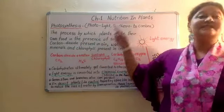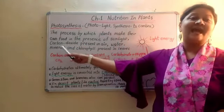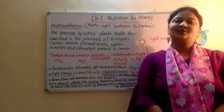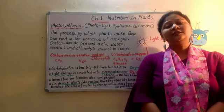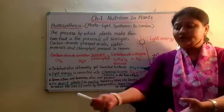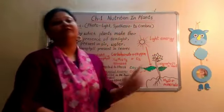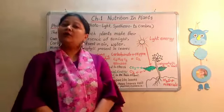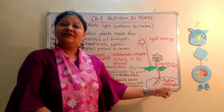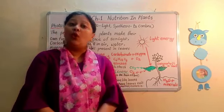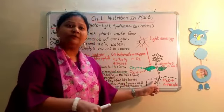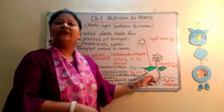The raw materials for photosynthesis are: carbon dioxide present in the air, water, minerals, and chlorophyll present in leaves. All plants prepare their food in leaves, so all the raw materials should reach the leaf. Water and minerals are present in the soil, and from the soil they are absorbed by the roots of the plants and then transported to the leaves.